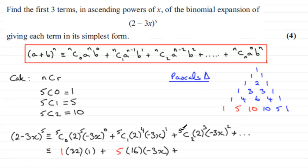And then we've got plus 5C2. 5C2 on the calculator comes out as 10, or by Pascal's triangle, it is 10. And then we've got 2 cubed, which is 8. And then you've got minus 3x all squared, which is plus 9x squared. And you've got plus the other terms.